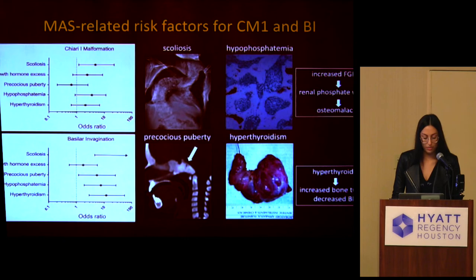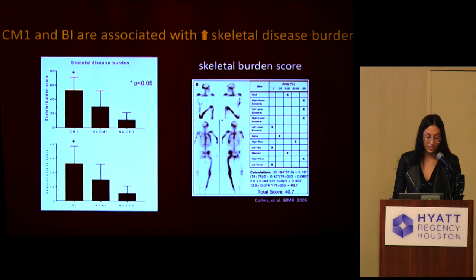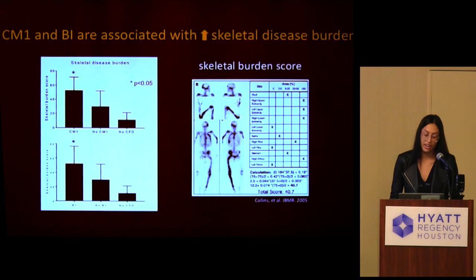We were able to identify risk factors for both Chiari malformation and basilar invagination. Both deformities were associated with scoliosis. Basilar invagination was associated with hypophosphatemia and hyperthyroidism, which are both endocrinopathies that contribute to bone metabolism. Basilar invagination was also associated with precocious puberty — one hypothesis being that early closure of cranial base synchondroses may distort the posterior fossa morphology. Additionally, patients with these deformities had increased skeletal disease burden, a validated tool to estimate the amount of bone disease in this heterogeneous patient population, measured on bone scintigraphy scans.